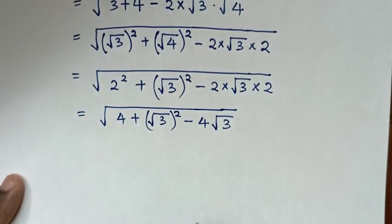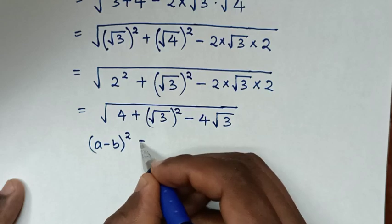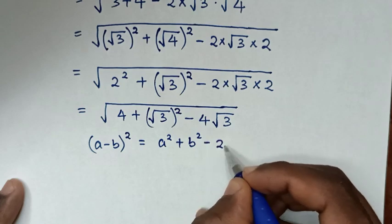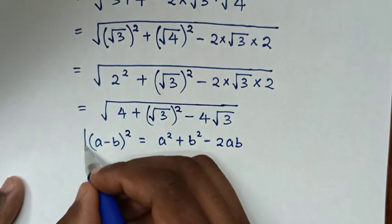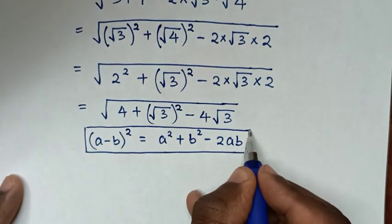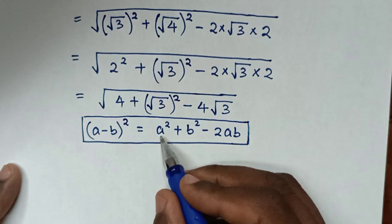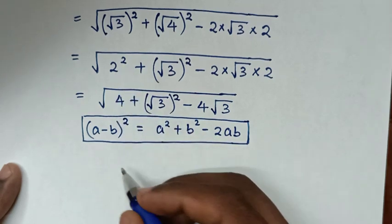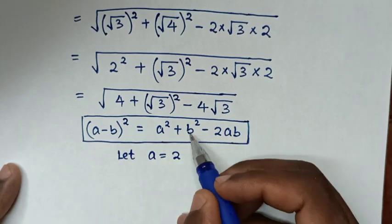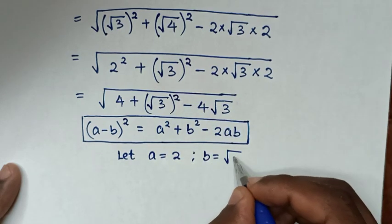From here, we compare with the identity (a − b)². When we compare a² with 2² we let a equal 2, and when we compare b² with (√3)² we let b equal √3.